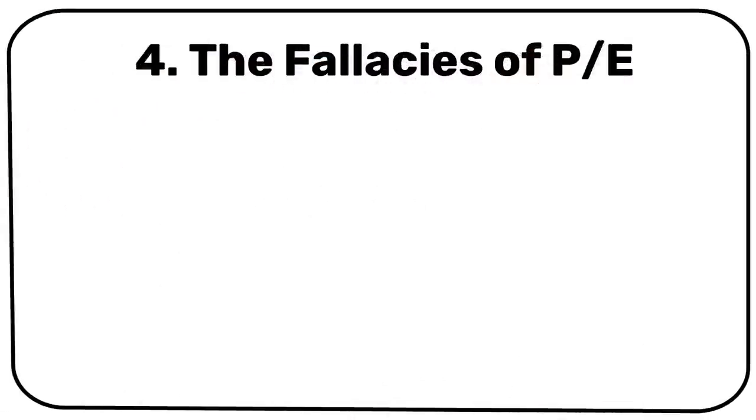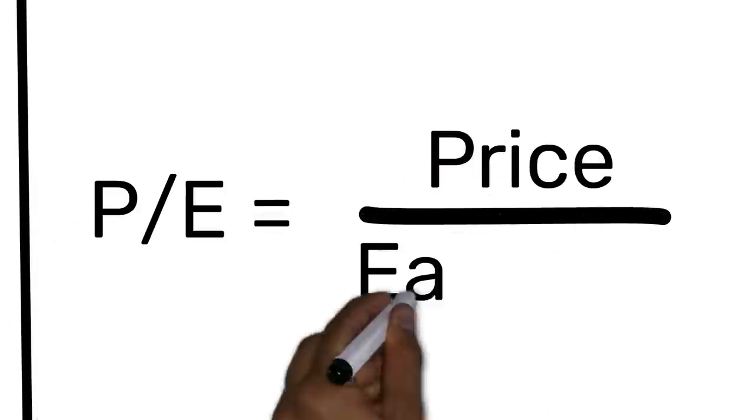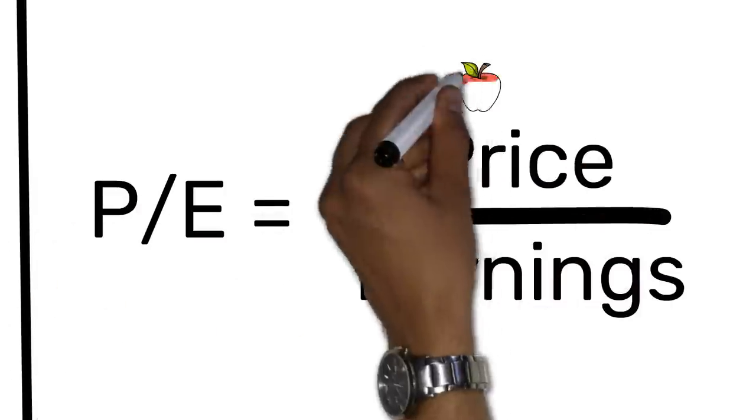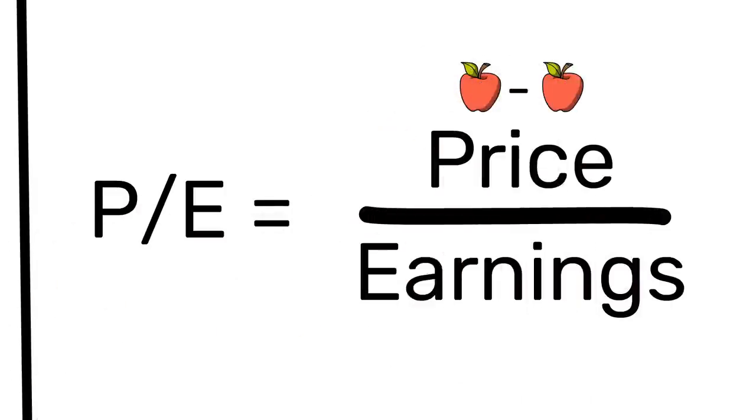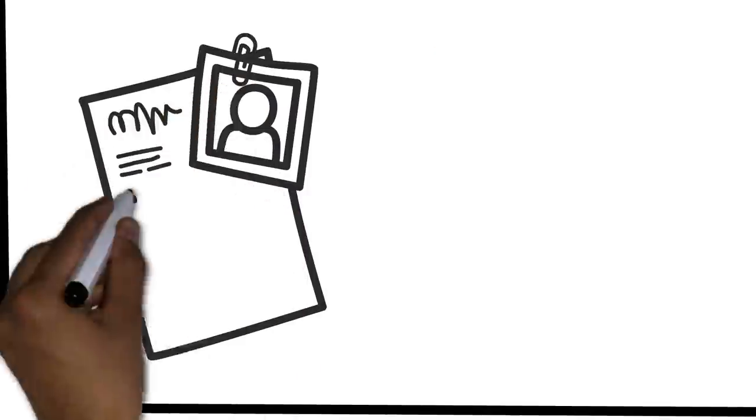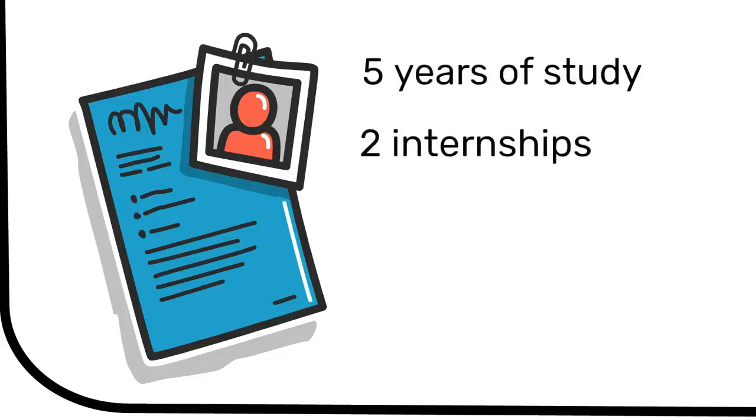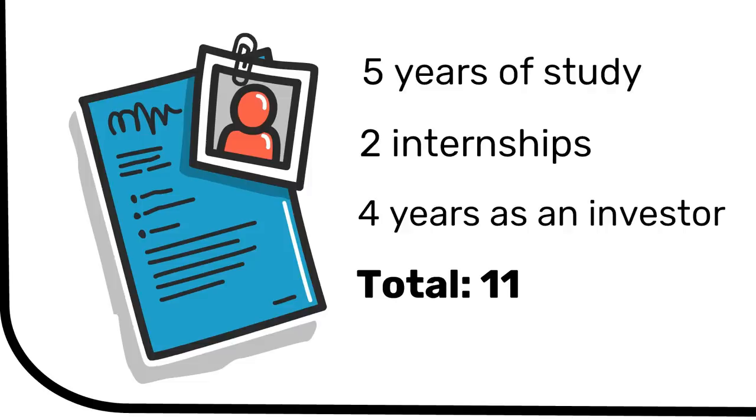Takeaway number 4. The fallacies of PE. All earnings are not created equal though. Price is comparable 1 to 1, just as long as you use the same currency. But earnings can vastly differ in their quality. You don't want to be like the college graduate who was looking for a job on Wall Street with a resume that read, 5 years of study, 2 internships, 4 years of beating the market, total 11. Hire me.